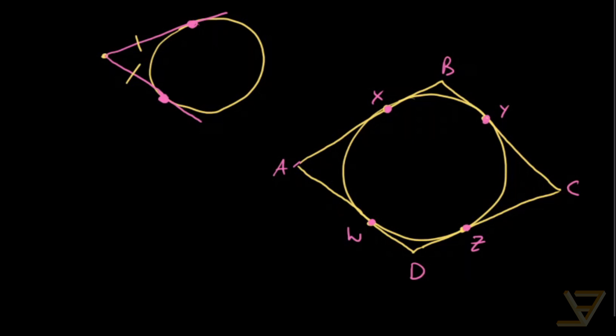So right off the bat, we can see that we can apply the property of tangents because AX is equal to AW, and BX is equal to BY, and CY is equal to CZ, and DZ is equal to DW.